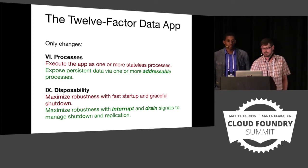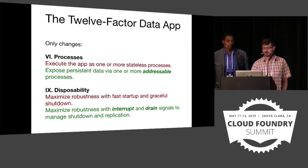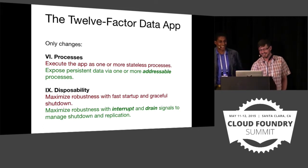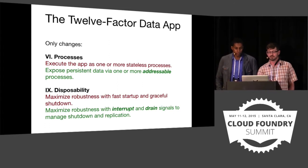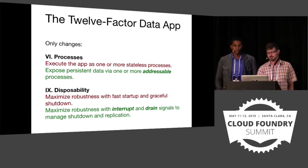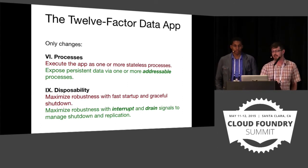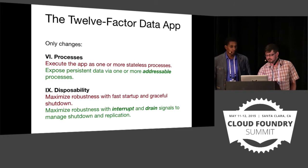These two points change, and everything else pretty much runs the same way. Before, with stateless web apps, you were executing stateless processes that are indifferentiable — you can't tell them apart. For data apps, what you do is expose persistent data via one or more addressable processes. These processes are individually addressable now. The other aspect that changes is disposability — you now need to add a concept of an interrupt and a drain signal to manage shutdown and replication.